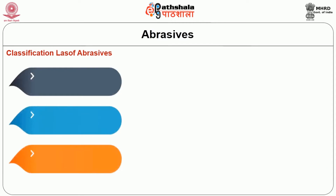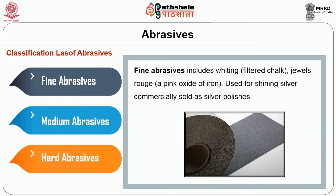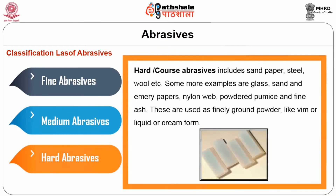Abrasives are broadly classified as fine, medium, and hard or coarse abrasives. Fine abrasives include whiting (filtered chalk) and jeweller's rouge, a pink oxide used for shining silver; commercially they are sold as silver polishes. Medium abrasives include scoring powders and paste made of fine minerals like limestone or calcite mixed with soap, detergent, and alkalis, with a little bleach included. Hard or coarse abrasives include sandpaper and steel wool.